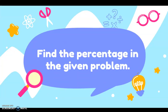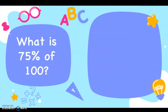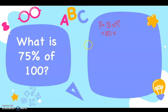Let's have more examples. Find the percentage: What is 75% of 100? The missing value is the percentage. Our base is 100 and our rate is 75%. Using the formula, P equals B times R. If the percentage is missing, the formula is P equals Base times Rate. So we have 100 multiplied by 75%. Again, you cannot multiply right away if it's a percent — you need to change it to a decimal.